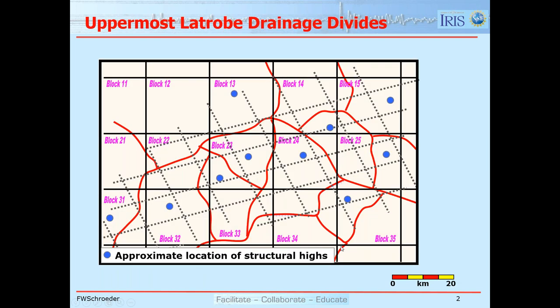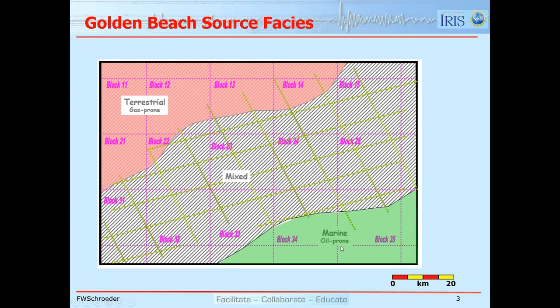In exercise 12, there is a map showing drainage divides and main structural highs. There's also a map for the source phase, the Golden Beach. From the previous lecture on the regional geology of the Gippsland Basin — where this data comes from — in the northwest the source is more likely to generate gas, in the southeast more likely to generate oil, and in the center it would generate a combination of oil and gas.